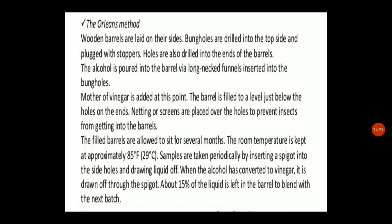In the Orleans method, wooden barrels are laid on their sides and bung holes are drilled into the top side and plugged with stoppers. Holes are also drilled into the ends of the barrels. Alcohol is poured into the barrel via long-necked funnels inserted into the bung holes, and mother of vinegar is added. The barrel is filled to a level just below the holes on the end. Netting or screens are placed over the holes to prevent insects. The filled barrels are allowed to sit for several months at approximately 29 degrees Celsius.